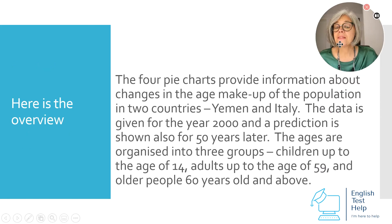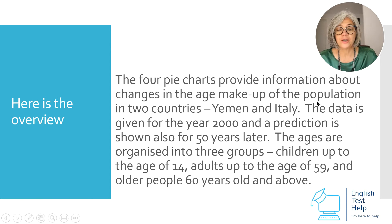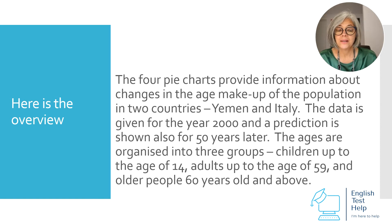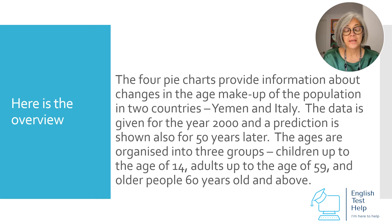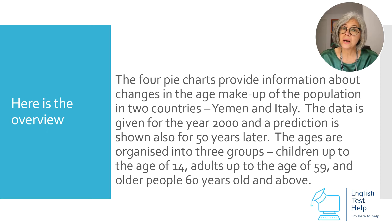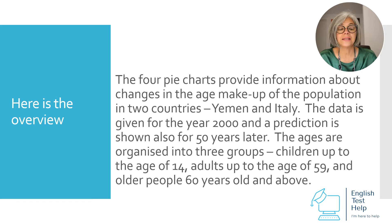Here is the overview. The four pie charts provide information about changes in the age makeup of the population in two countries, Yemen and Italy. The data is given for the year 2000 and a prediction is shown for 50 years later. The ages are organised into three groups: children up to the age of 14, adults up to the age of 59, and older people 60 years and above.